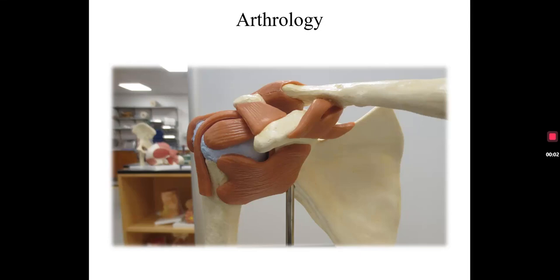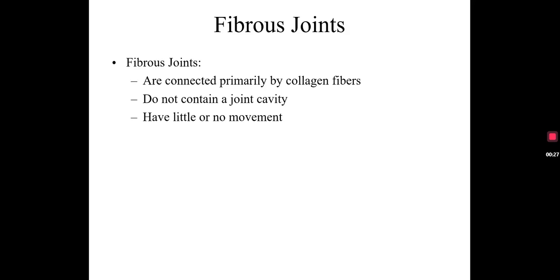In this lesson, we will begin our discussion of arthrology. Arthrology is the study of joints. What I'd like to do first is take a look at the anatomy of different types of joints. There are fibrous joints, cartilaginous joints, and we're going to see in another lesson synovial joints. In this lesson, I want to focus on fibrous joints as well as cartilaginous joints. So let's take a look at fibrous joints first.